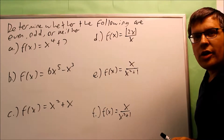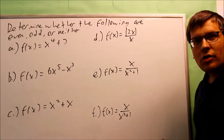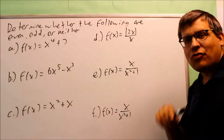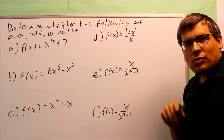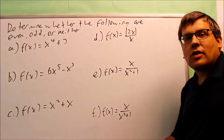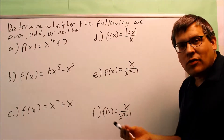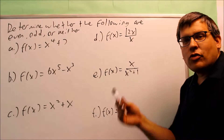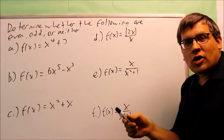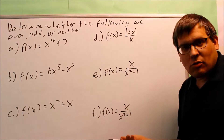We want to determine whether the following are even, odd, or neither. What you do is find f of negative x first. Once you find f of negative x, if you simplify it and get exactly the same function as what you started with, it's even. If you put f of negative x in and get f of x with a negative sign out in front of the whole thing, that means it's going to be odd.